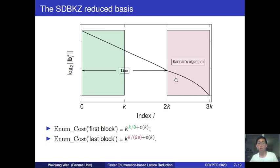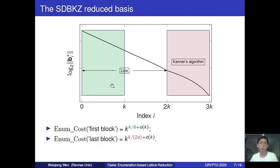But this worst-case cost is not the case for every block. For example, for the first block over a straight-line region, the enumeration cost is only k^{k/8} plus a small order of k. This difference introduced a long-standing conjecture that it seems possible to achieve the same quality as SDBKZ but with reduced overall time complexity k^{k/8} instead of k^{k/(2e)}. In this work, we give a positive answer to this conjecture.